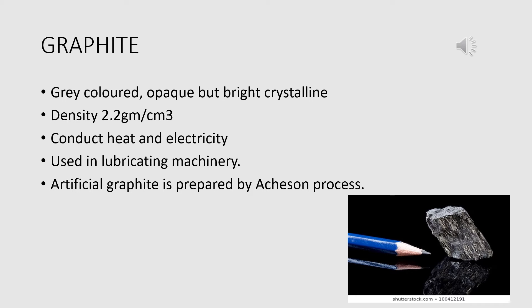Uses of graphite. Graphite has many uses. It is used as the lead of a pencil. Colloidal graphite suspended in oil is used as lubricating oil for machinery. Graphite is used as electrodes and in batteries. Due to its thermoconductivity, graphite is used in furnaces. Graphite is also used as a moderator in atomic reactors.